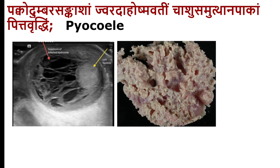In Pittaja Vruddhi, the swelling would be reddish in color with all signs of inflammation. The patient also has systemic features — raised temperature and local burning sensation. This is typical of infective orchitis, which results in pus formation. The patient presents with acute pain, swelling, signs of inflammation, and fluctuance.